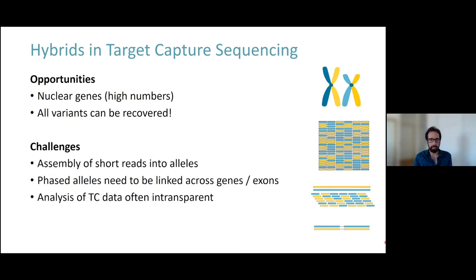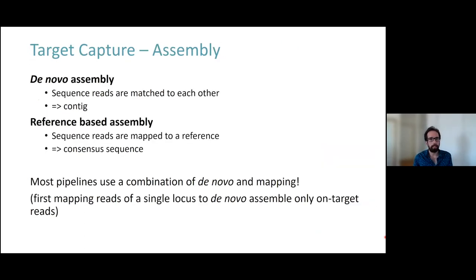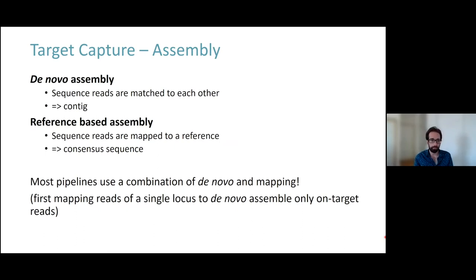The two main assembly methods are de novo assembly and reference-based assembly. In de novo assembly, sequence reads are matched to each other to generate a contig sequence. In reference-based assembly, sequences are mapped to a reference to generate a consensus sequence. Standard pipelines use a combination of both — first mapping reads to a single locus, then de novo assembly with those matching reads.